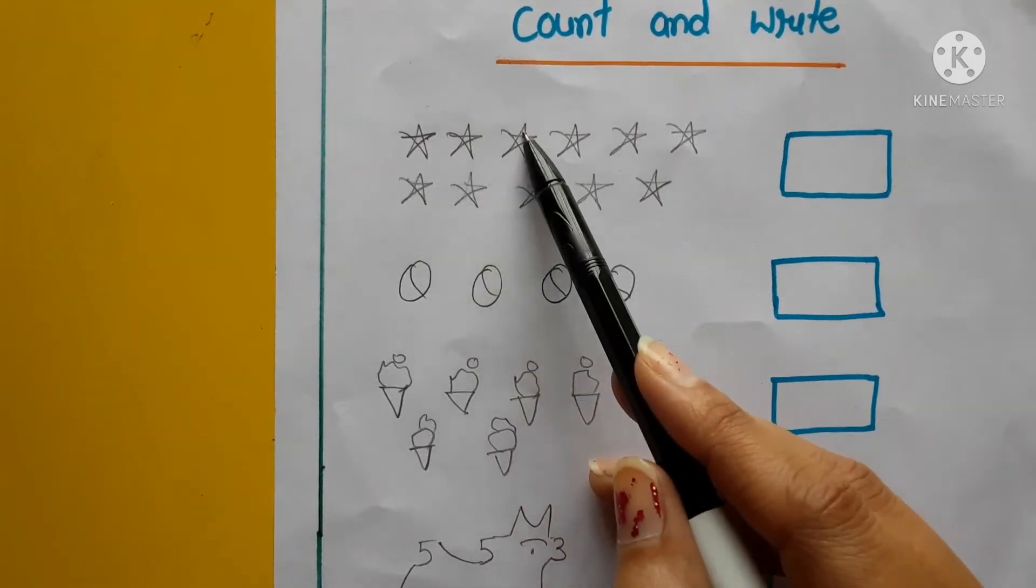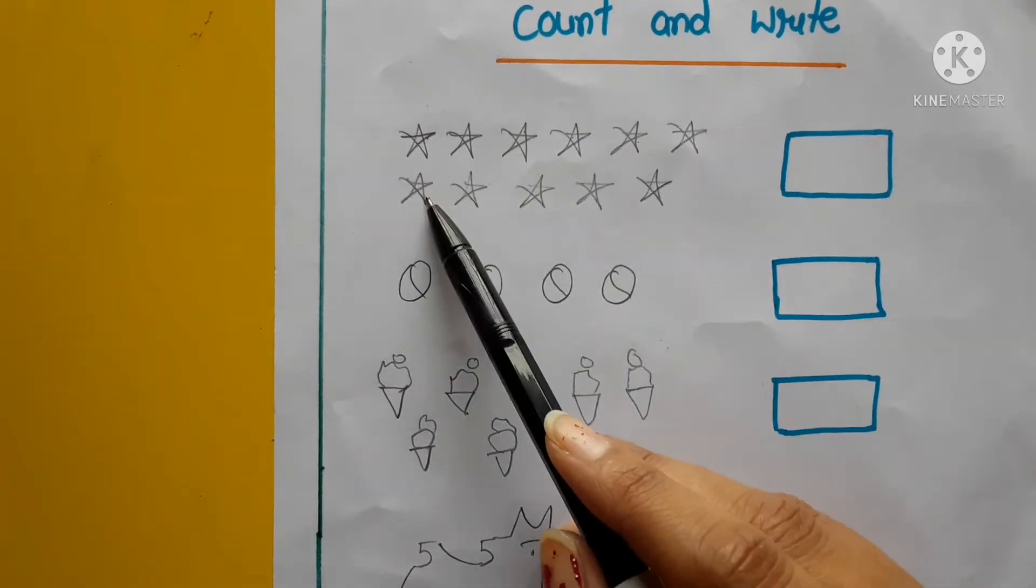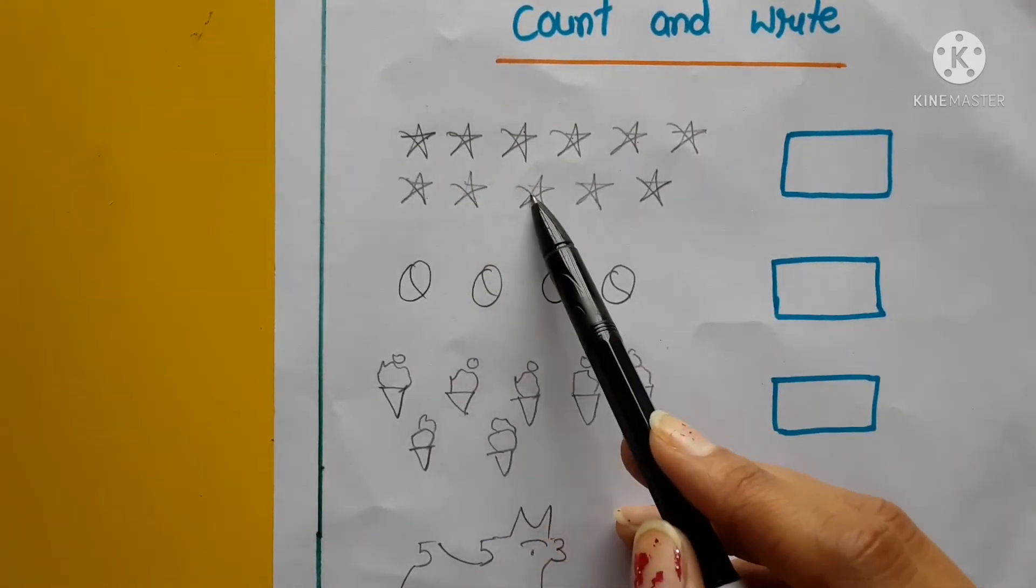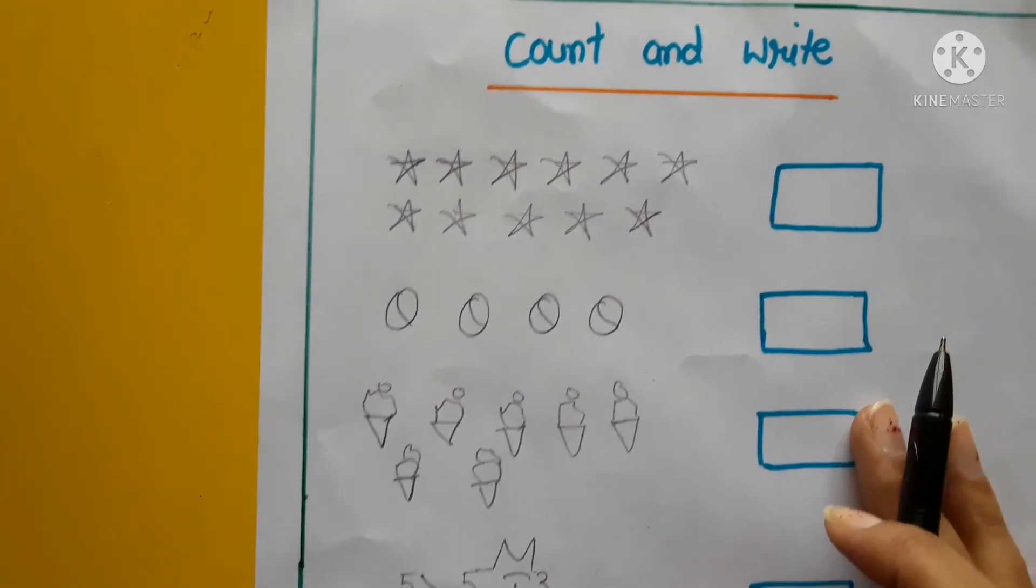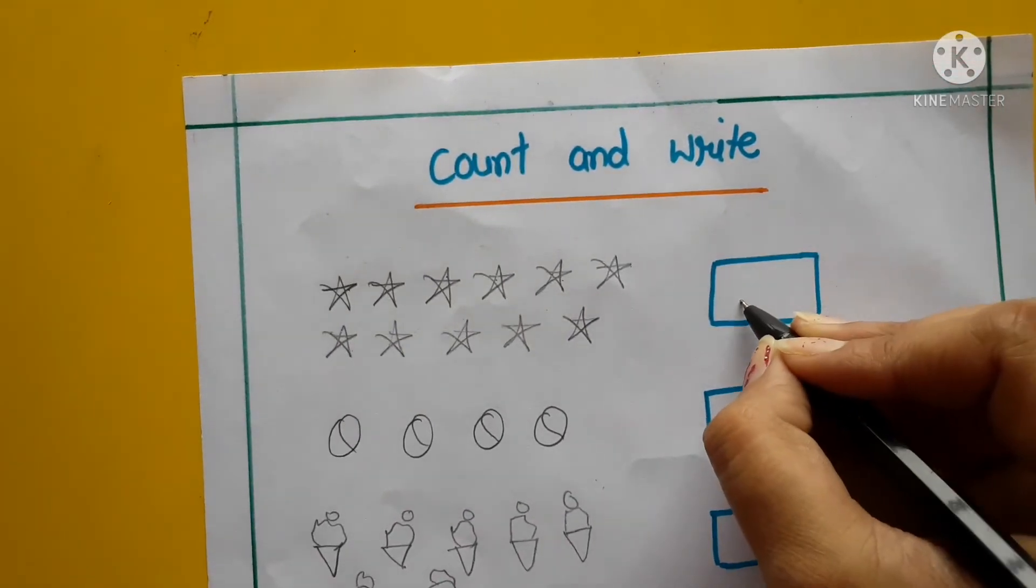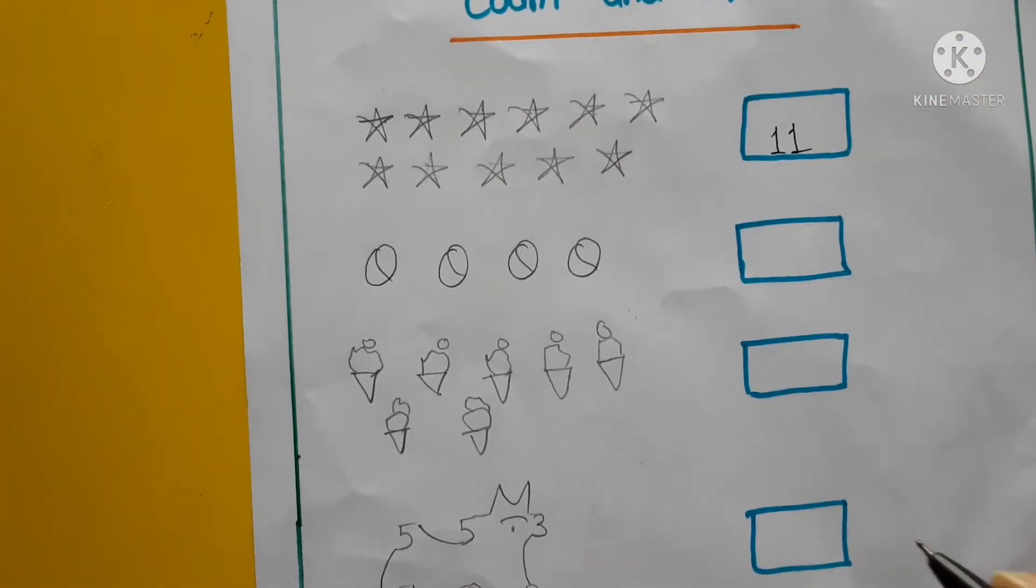First of all, yeh stars hai. Inhe count karna hai, kitne hai? 1, 2, 3, 4, 5, 6, 7, 8, 9, 10, 11. Kitne hai yeh? 11. Toh hum yaha pe kya mention karna hai? 11. 11 kaisa hoga? 1, 1, 11. Theek hai?